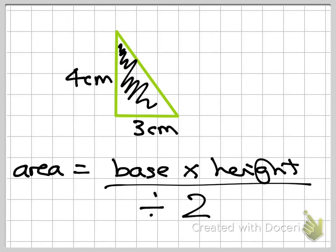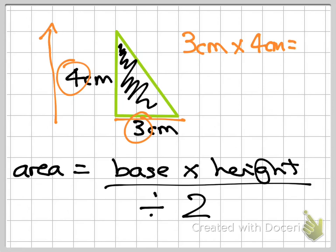Okay, so in this example, the base is 3 centimetres. Then I multiply it by the height, so how tall the triangle is, and that's 4 centimetres. So 3 times 4 is 12.